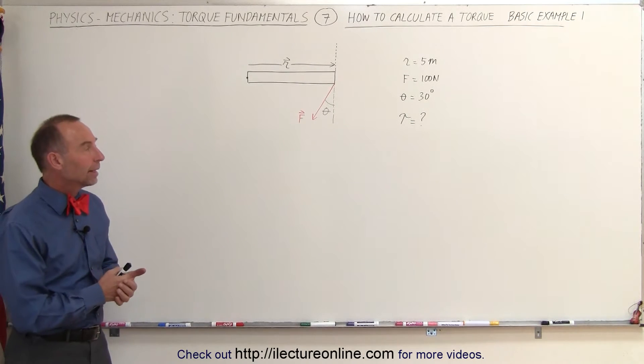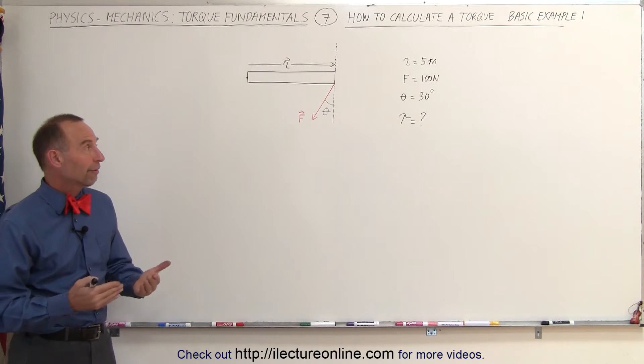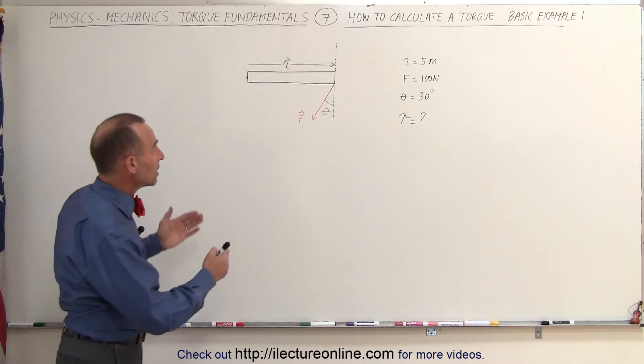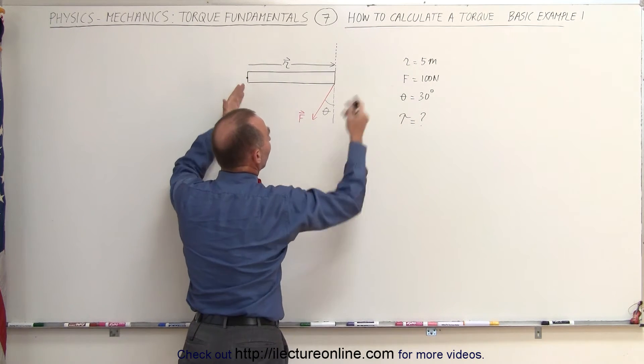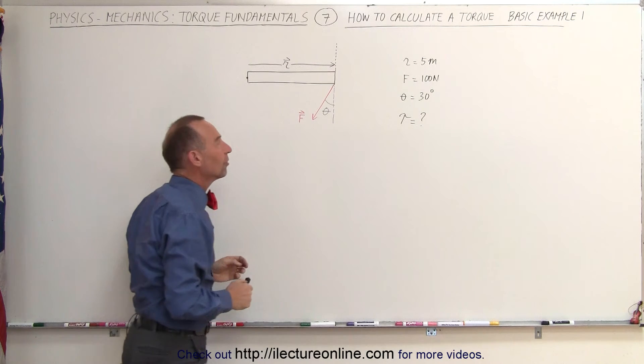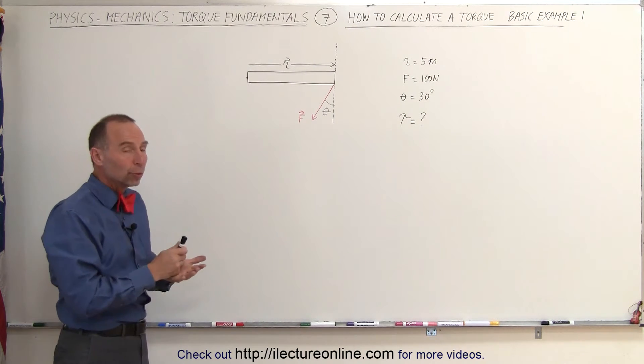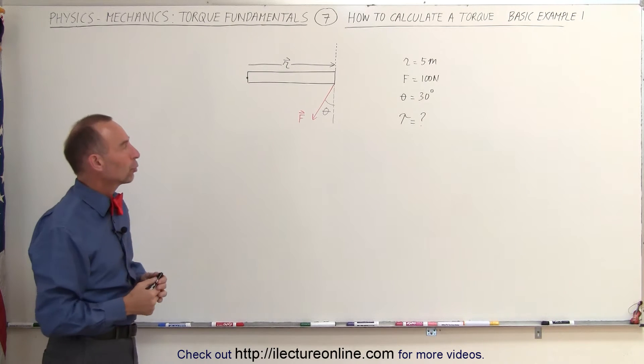Welcome to Electronline. Here's a basic example of how to find the torque. The distance from the pivot point to where the force is acting is 5 meters. The magnitude of the force is 100 newtons and theta is 30 degrees. We're going to find both the magnitude and the direction of the torque.